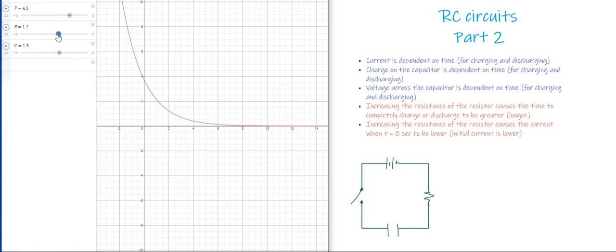You can kind of see that here in this graph. As I adjust this, that's what we see happening. We kind of know what's happening with the resistance. We also said that it's going to take longer for it to completely charge or discharge. And so, let's try to take a look now at what happens with the capacitance.